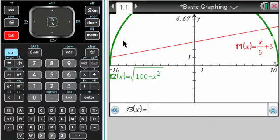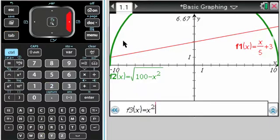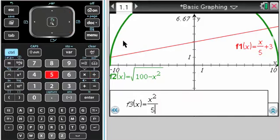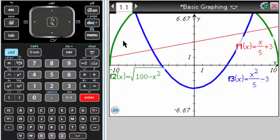And I'm going to graph, so I hit tab to get that back again, x squared over 5. Arrow to the right to get out of it this time, and then minus 3. Okay, so now I have three graphs.